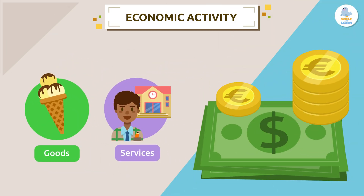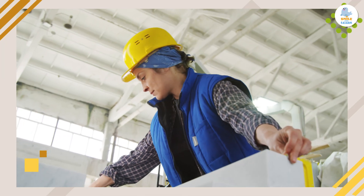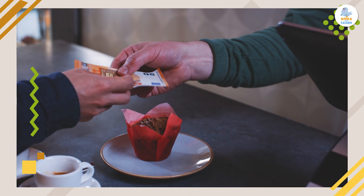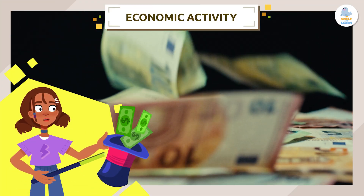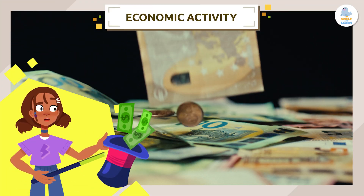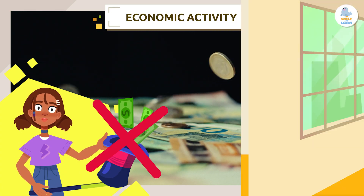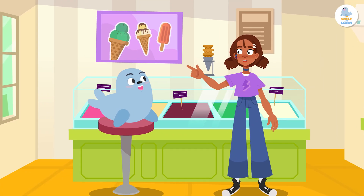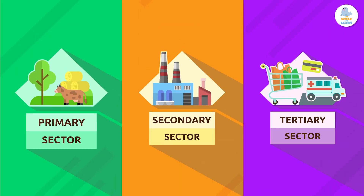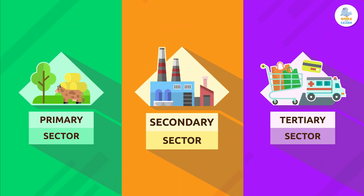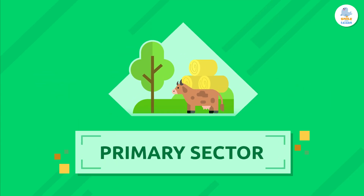To get goods and services, we use money. We usually earn money by working, and we use money to pay for the things we need. It would be nice for money to just magically appear, but I'm afraid it doesn't work like that! We group economic activities into three sectors: the primary sector, the secondary sector, and the tertiary sector.